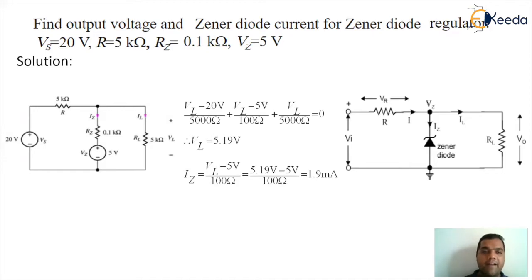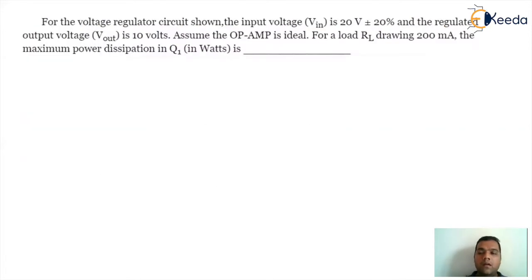And then we can find the value of Zener current IZ as VL minus 5 by RZ. So it is 5.19 minus 5 divided by 100. You will get the value of Zener current as 1.9 milliampere. So this is how you calculate the value of Zener current and load voltage. For load voltage, we have applied KCL at the top node, and then the current was obtained from a simple formula: potential difference upon resistance. Next question.